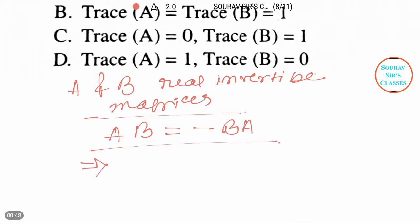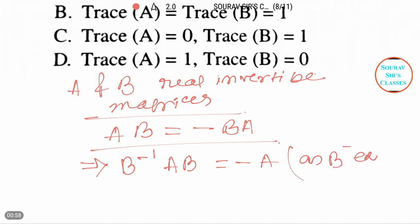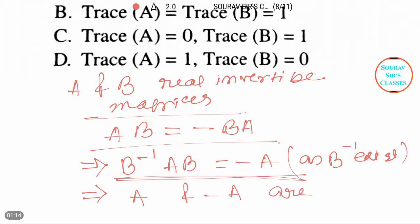From this we can write it as: B inverse A B equals minus A, since B inverse exists. In the second step, we can write that A and minus A are similar matrices.